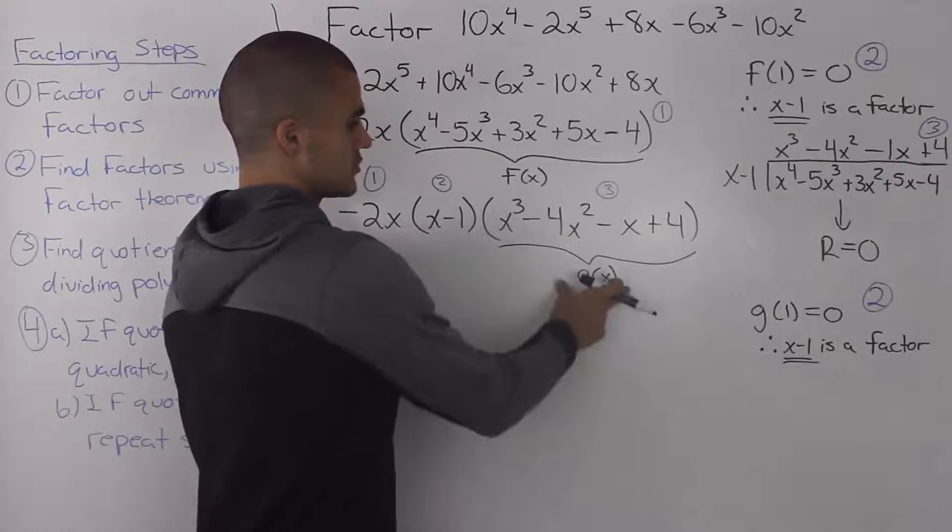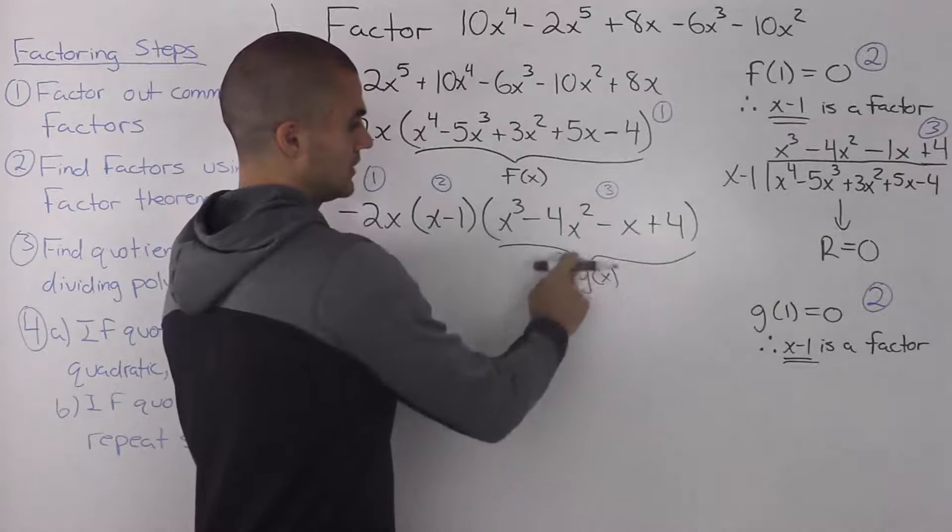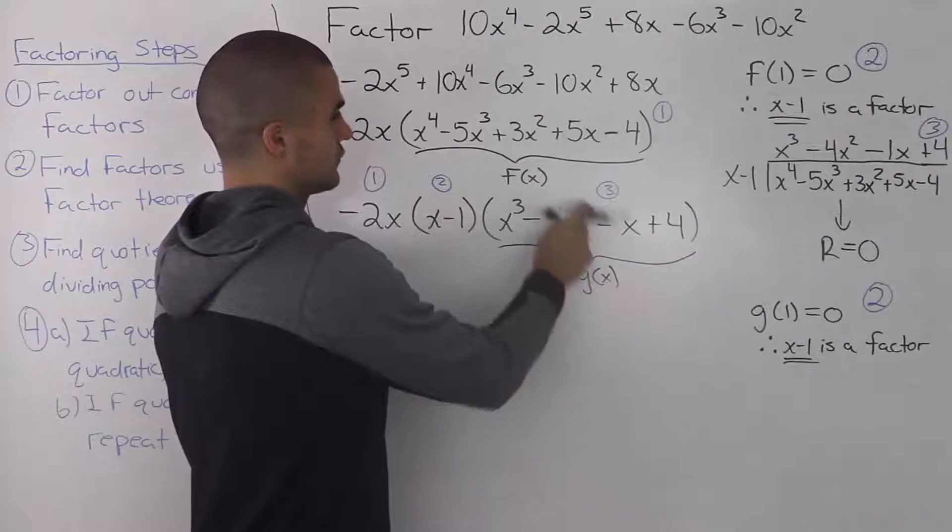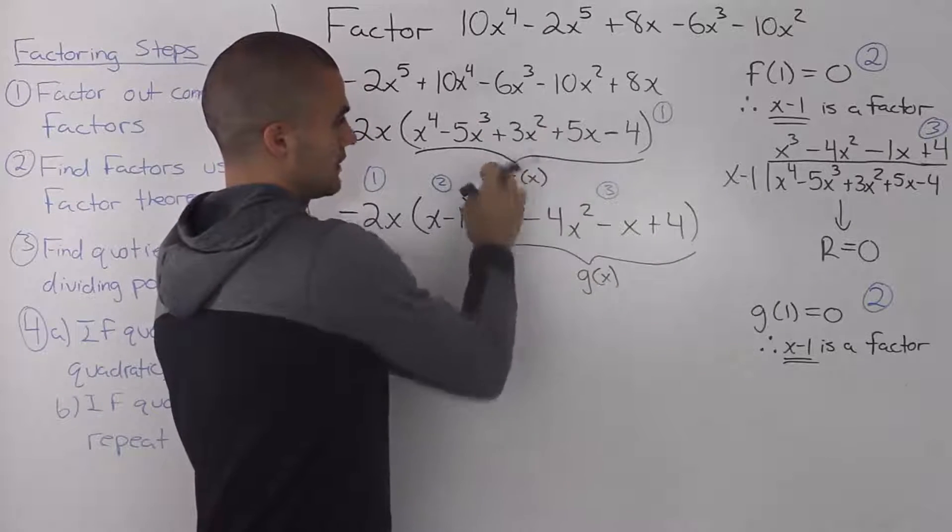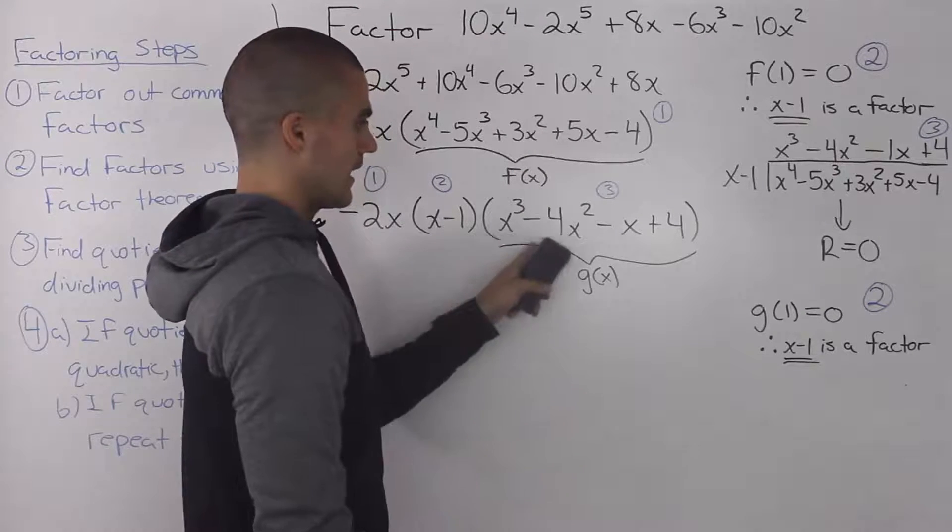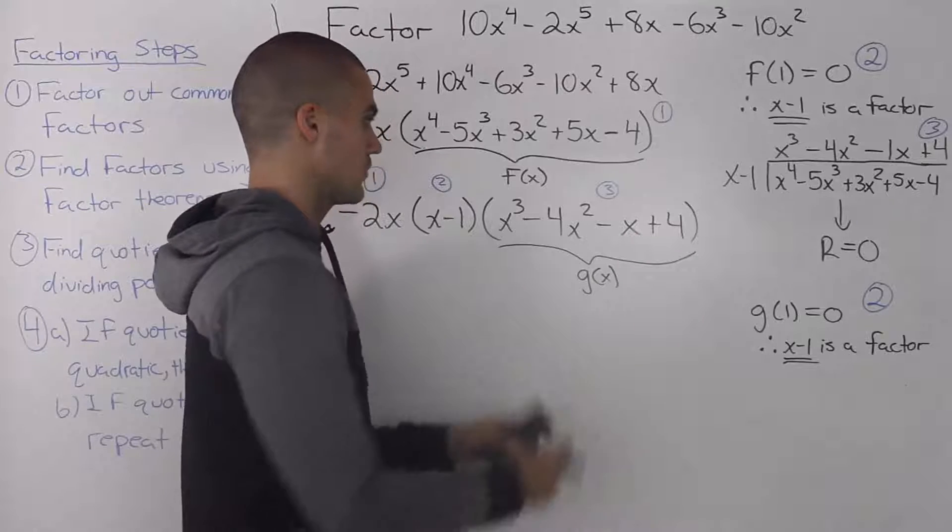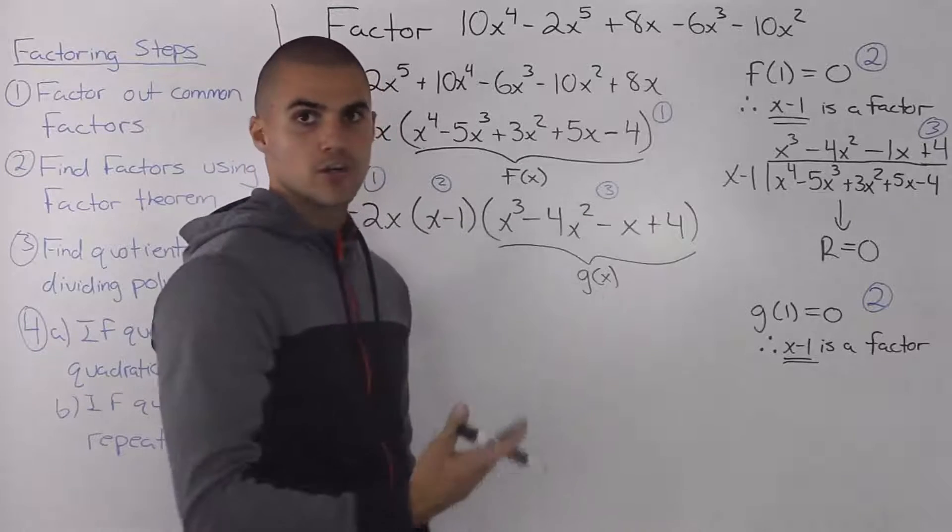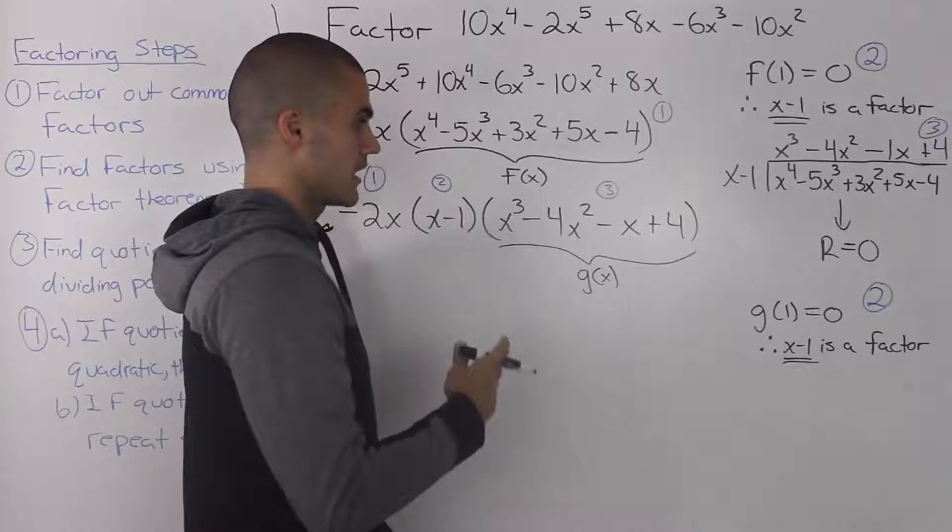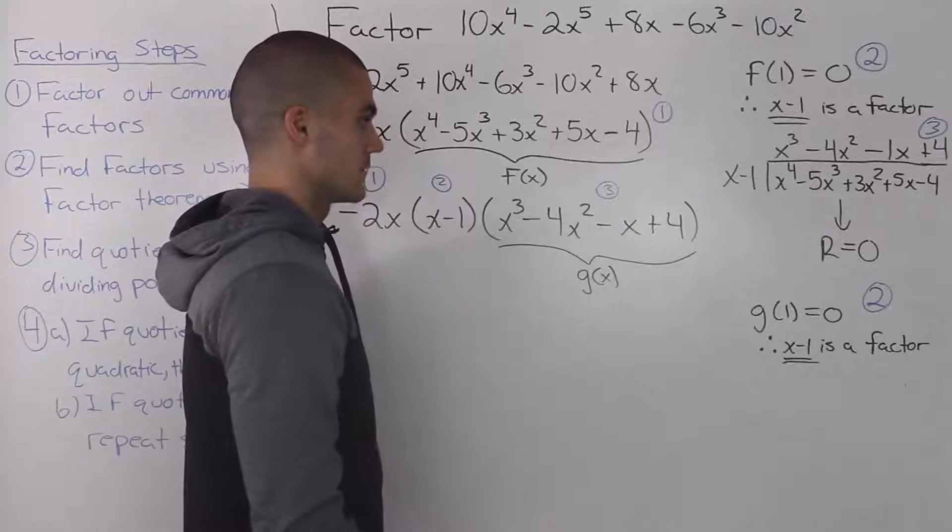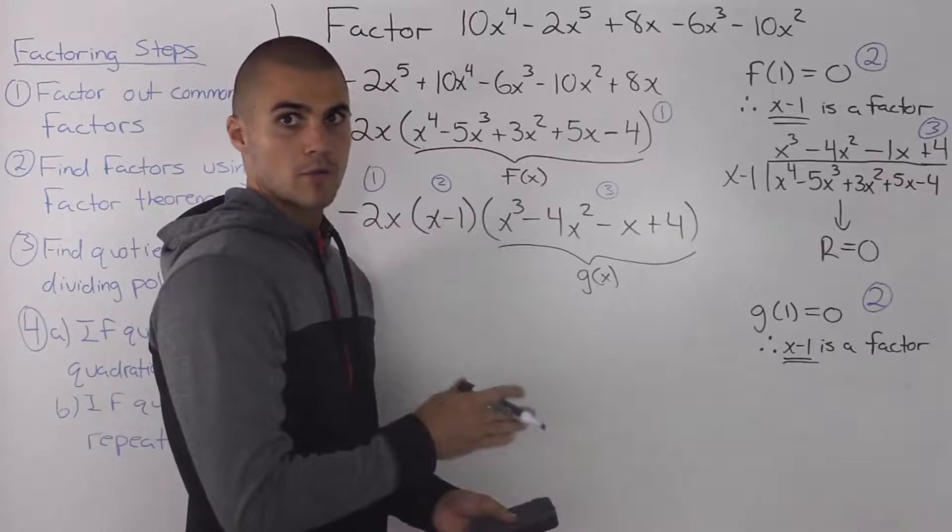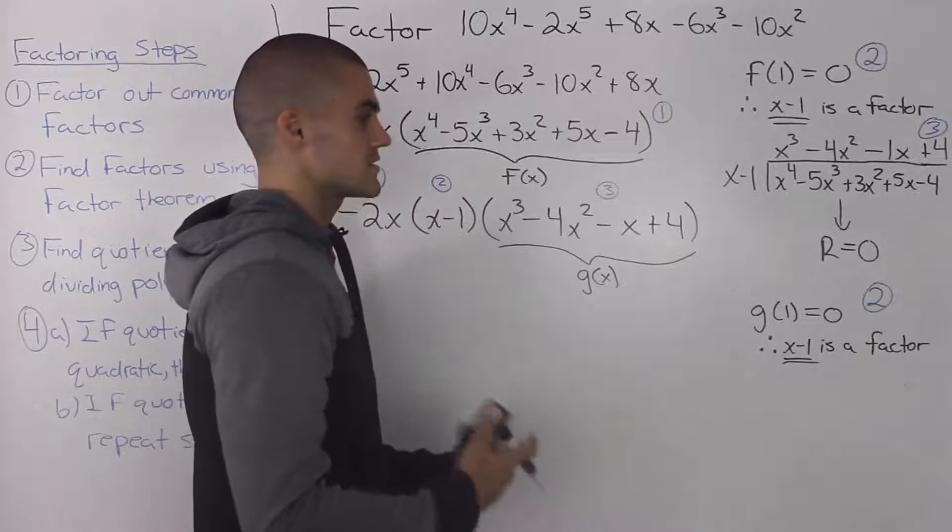So going back to step 2 for this polynomial, I labeled it as g of x. So we just avoid confusion with this polynomial here that I labeled as f of x. And we have to use the factor theorem to find factors for it. So again, we would just plug in a bunch of values for x until we get a value of 0. So trying plus 1, minus 1, plus 2, minus 2, etc.